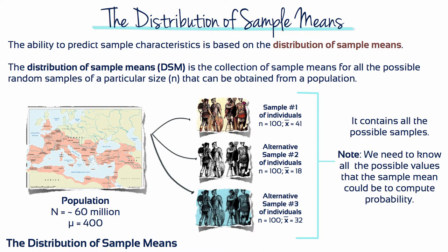They will contain different individuals, they will have different scores, and they will have different sample means. Given that thousands of different samples can come from one population, it may seem hopeless to try to establish some simple rules for the relationships between samples and populations.